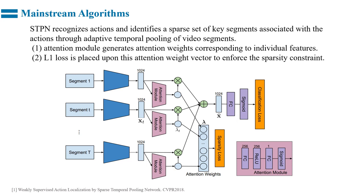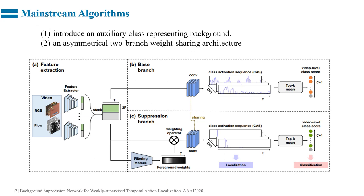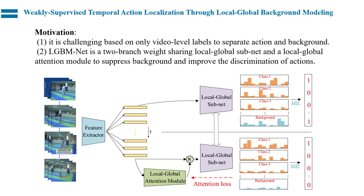We introduce the existing methods. STPN recognizes actions and identifies a sparse set of key segments associated with actions through adaptive temporal pooling of video segments. The attention module generates attention weights corresponding to visual features, and L1 loss is applied on the attention weight vector to enhance sparse construction. The other baseline is BASNet, which introduces an auxiliary class representing background and uses an asymmetrical two-branch weight-sharing architecture.